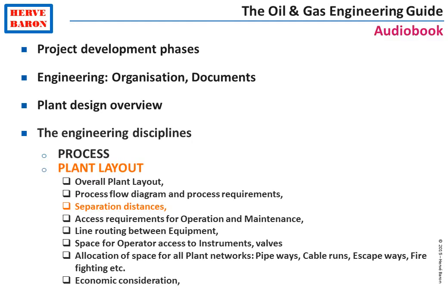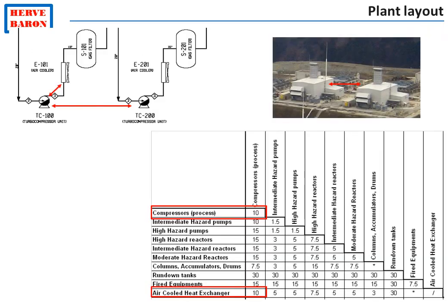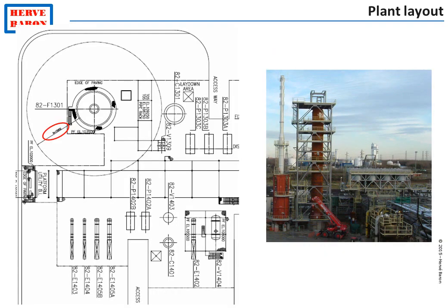Similarly to process units, separation distances are kept between high-risk process equipment. Only a few equipment types are concerned — these include high pressure pumps handling flammable fluids at high pressure and temperature, flammable gas compressors, and so on. A separation distance is kept between these high-risk equipment based on the combination of hazard level. For example, a distance of 15 meters will be provided between a high hazard reactor and a flammable gas compressor. A separation distance is also naturally kept between an open flame furnace and the rest of the facility.